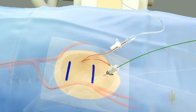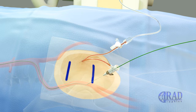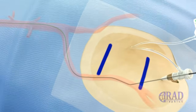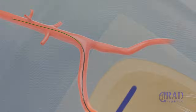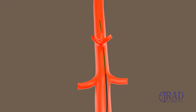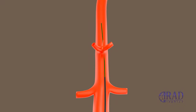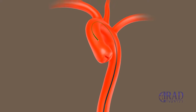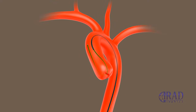Subsequently, infusion of normal saline is started through the sheath to avoid possible clot formation at the tip of the sheath. A curved catheter is advanced over the wire through the sheath into the aorta, and the curved tip of the catheter is formed in the aortic arch by pulling back the wire and simultaneously twisting the catheter.